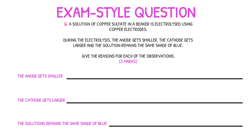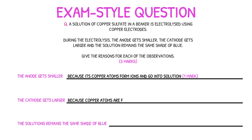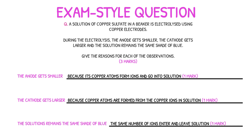We'll start by explaining why the anode gets smaller. The copper atoms that make up the copper electrode begin to oxidise, losing two electrons to form copper ions, which then enter the solution. This constant loss of copper atoms at the anode explains its loss in mass. In contrast, the cathode gets larger because the copper ions from the solution are reduced at the cathode and deposited as solid metal. Finally, the solution remains the same shade of blue because there are the same number of copper ions entering the solution as there are leaving.